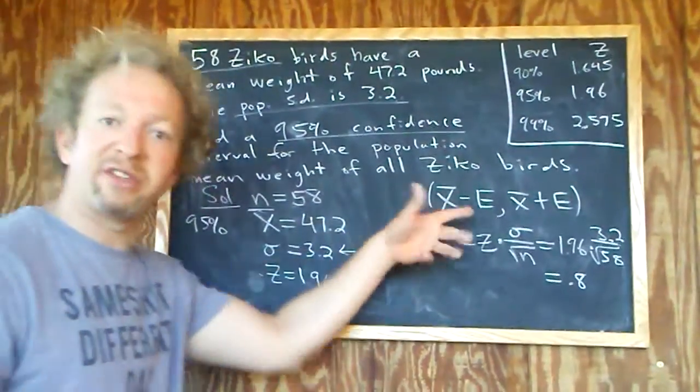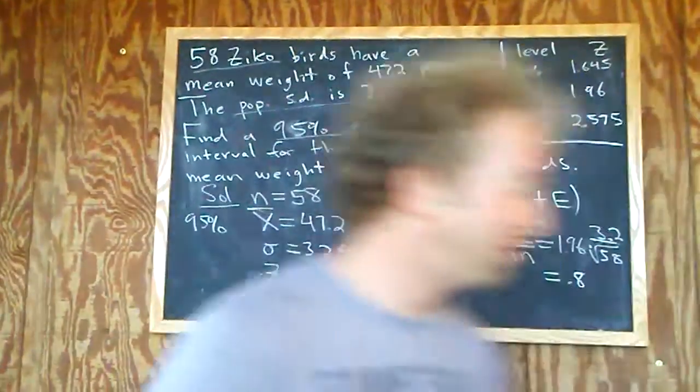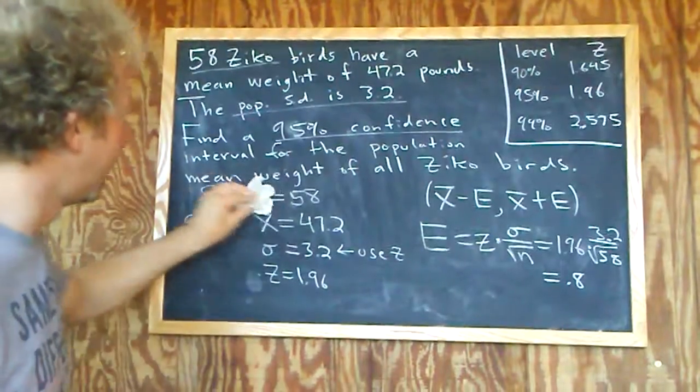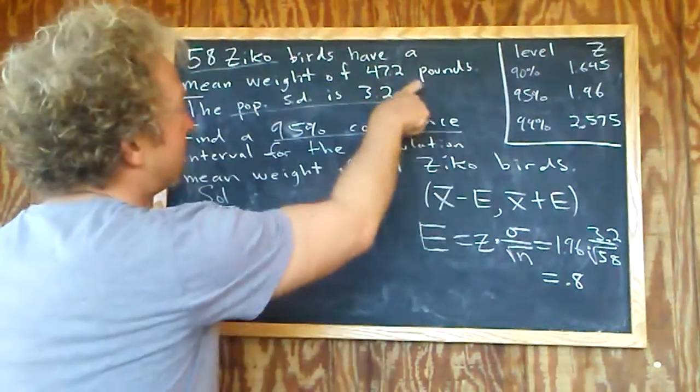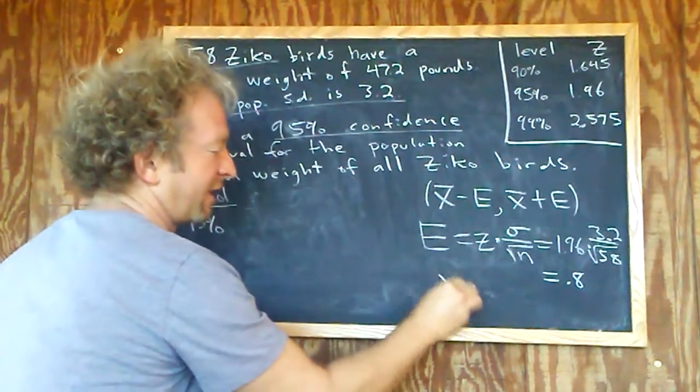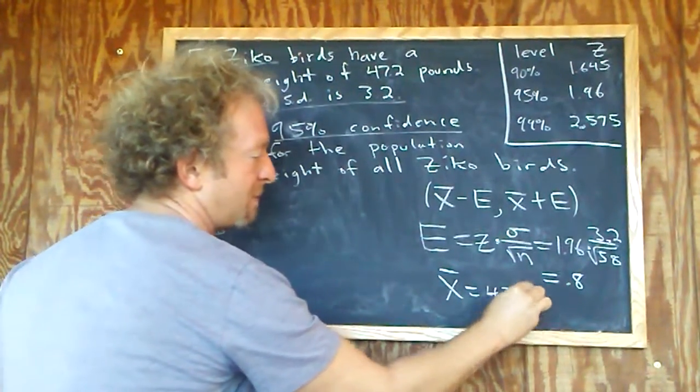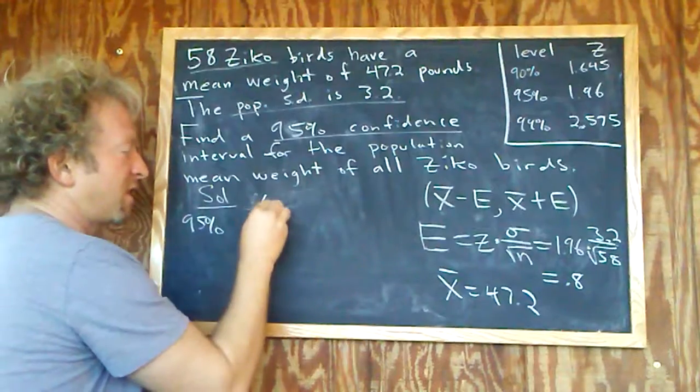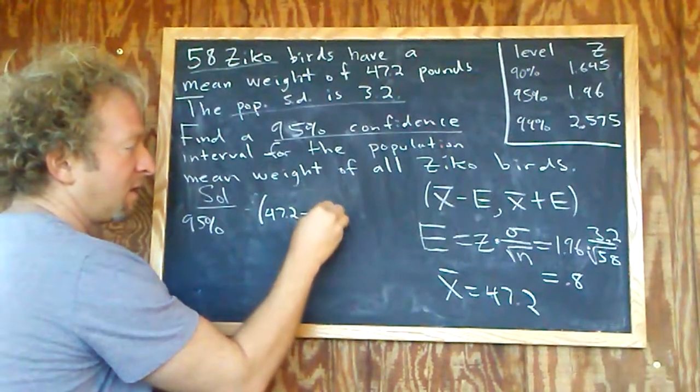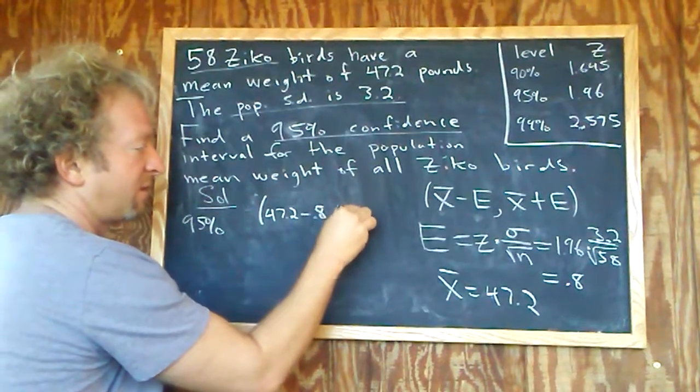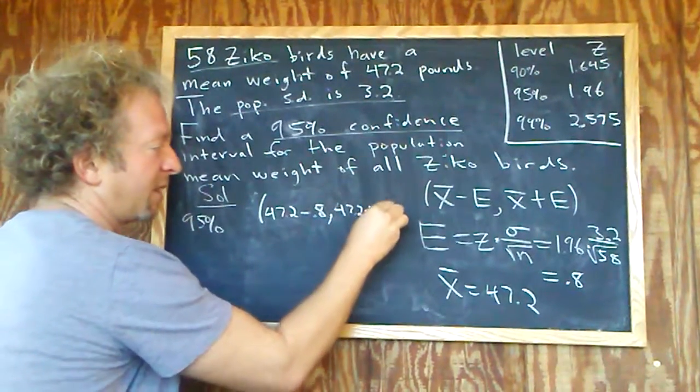Now we just plug everything into the formula. Let's go ahead and do that. And x-bar was 47.2, let's not forget that, I erased it. That's bad. All right, so 47.2, that's x-bar, minus 0.8, comma, and then 47.2 plus 0.8.